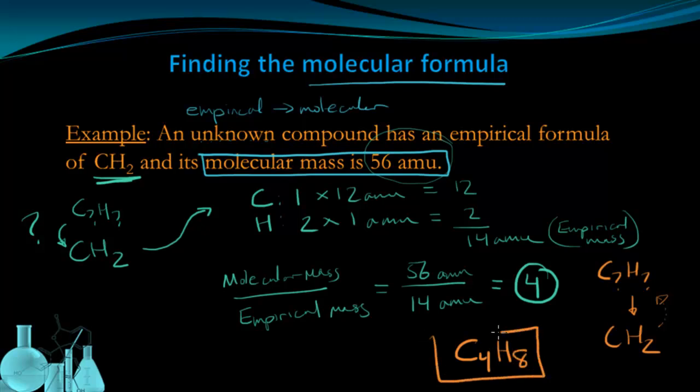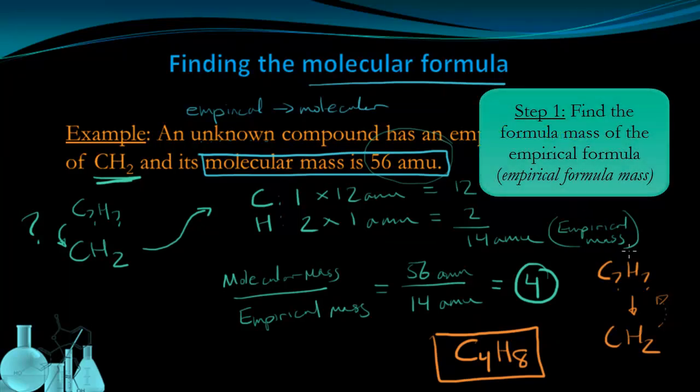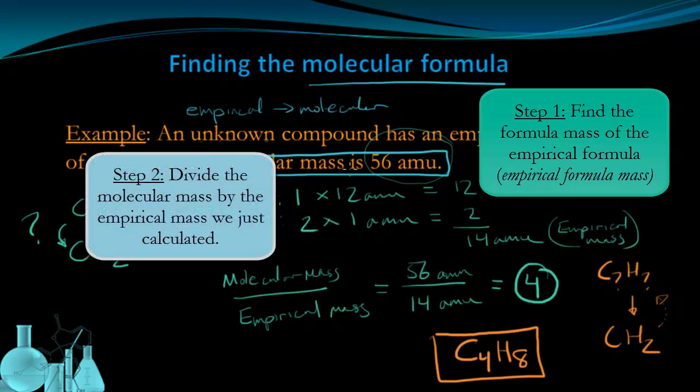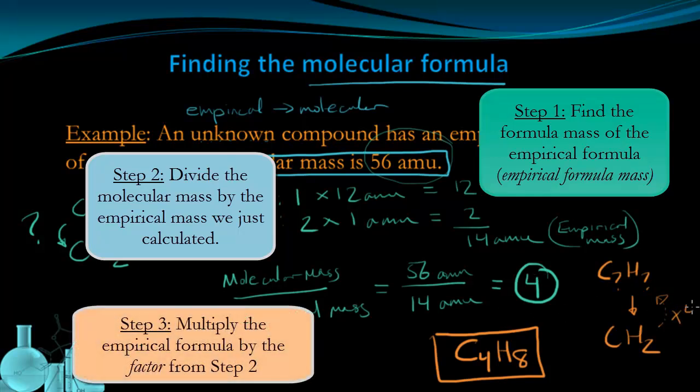This is the molecular formula for an unknown compound that has an empirical formula of CH2 and a molecular mass of 56 AMU. To recap what I did, I first found the empirical mass. Then I created a ratio between the molecular mass given to me in the problem and the empirical mass. That gave me a factor that I used to then multiply the empirical formula by to give me the original molecular formula, C4H8.